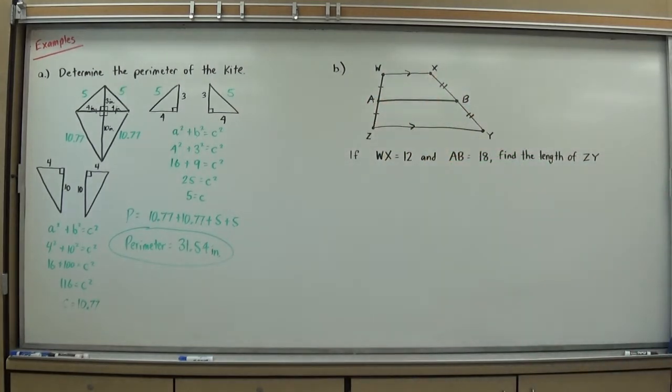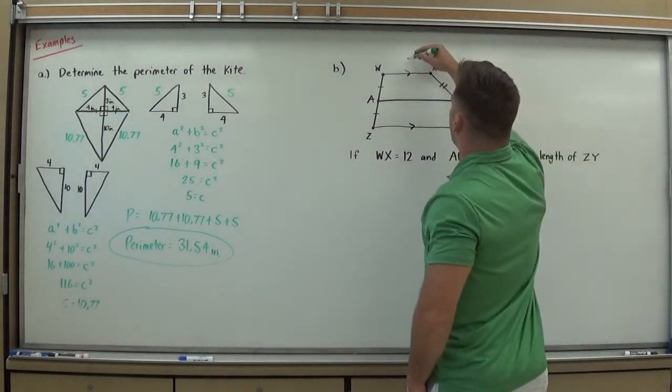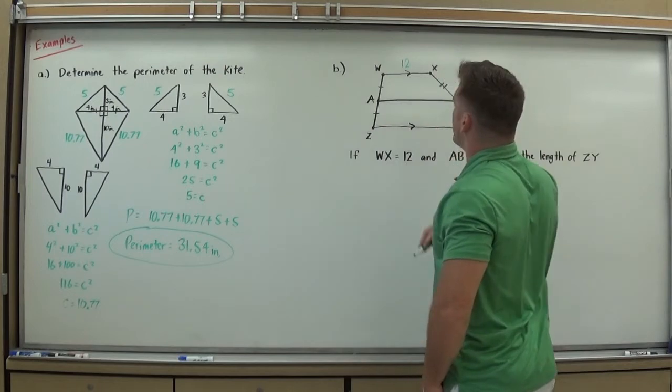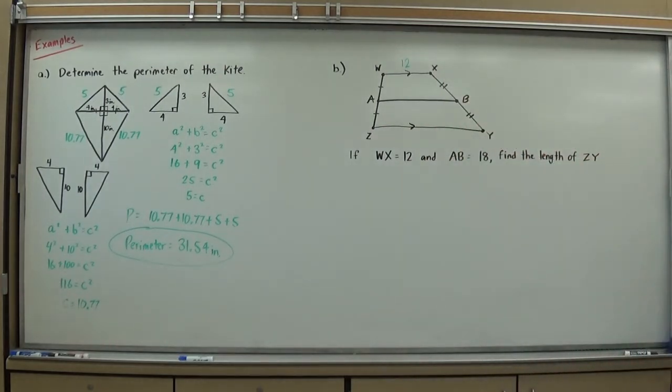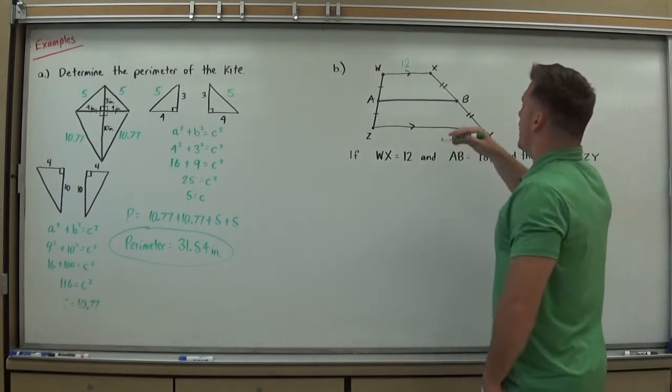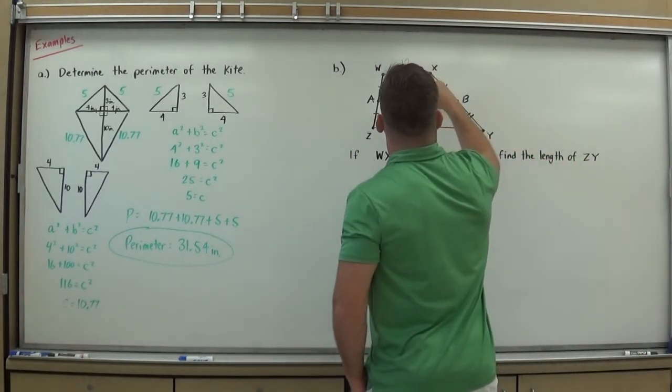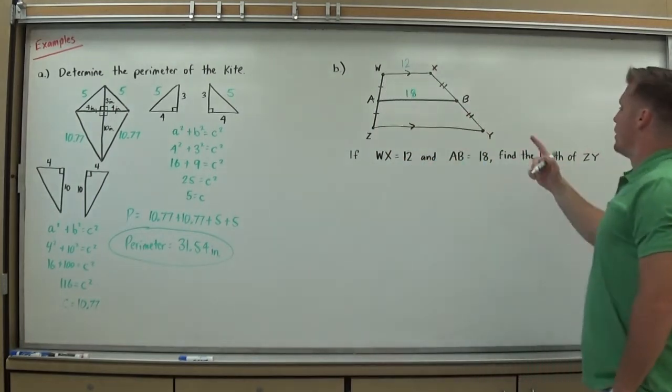So I can actually use mid-segment rules possibly in this. So let's look at the info they give us. WX equals twelve. I'm always marking everything anyone ever gives me. If they don't give me a picture, I'm drawing a picture. Pictures are fantastic for geometry guys, absolute necessity. AB is eighteen, and ZY is what I'm looking for.